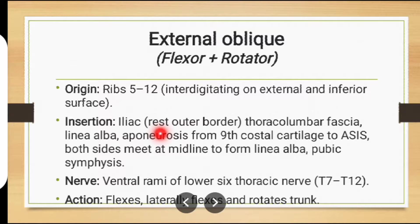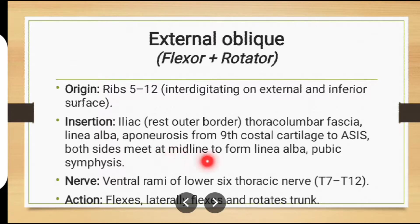Insertion: iliac crest outer border, thoracolumbar fascia, linea alba aponeurosis from 9th costal cartilage to anterior superior iliac spine — both sides meet at midline to form linea alba — and pubic symphysis. Nerve supply: ventral rami of lower six thoracic nerves. Action: flexion, lateral flexion, and rotation of trunk.